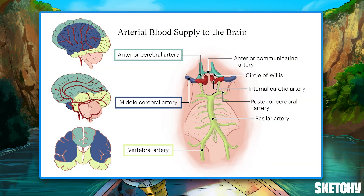The anterior cerebral artery, or ACA for short, originates from the internal carotid artery and supplies the medial surface of the parietal and frontal lobes, as well as parts of the corpus callosum, internal capsule, and basal ganglia.